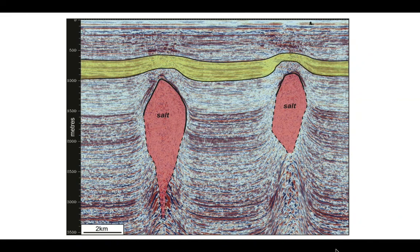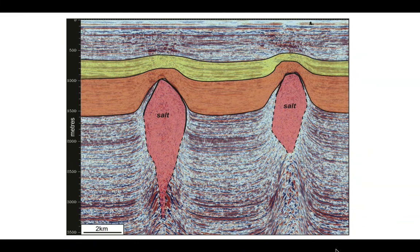Let's keep moving down. Here's another package that we can pick beneath the yellow one, and this orange one brings out the geometry even more so, with thinning across the crest of the domes and a thicker succession within the synclines.